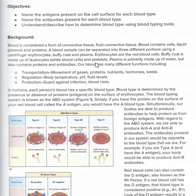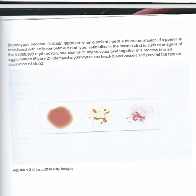Blood is a connective tissue, and connective tissues are made of a matrix and cells. The matrix is the plasma, which contains albumin, antibodies, nutrients, waste, and similar things. Then you have the formed elements: red blood cells — properly called erythrocytes — white blood cells or leukocytes, and platelets. If you spin blood in a centrifuge, the heavy stuff goes to the bottom and the plasma goes to the top.